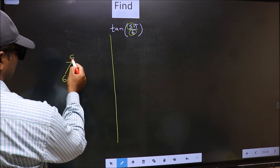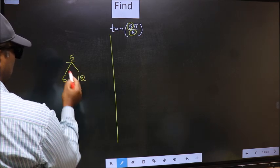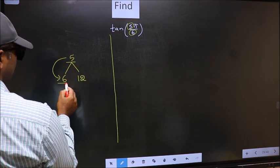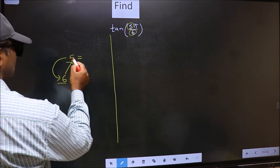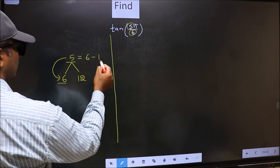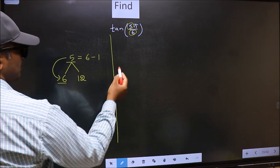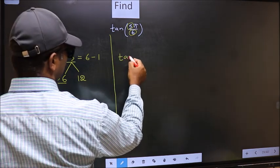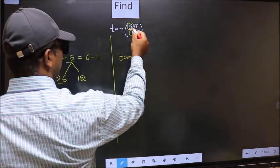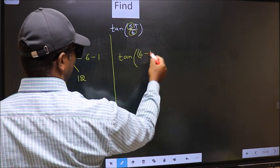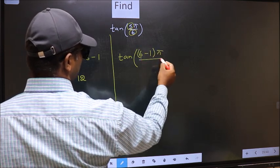So now, 5 is close to which number? This is close to 6. So 5 should be written as 6 minus 1. This will become tan, in place of 5, now you should write (6-1)π/6. This is your step 1.